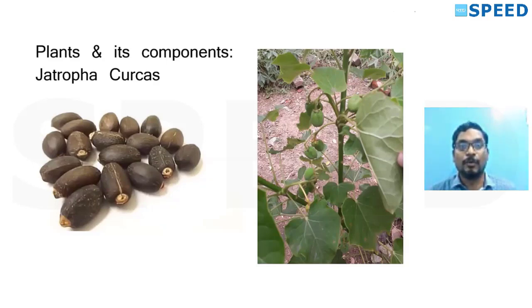Only four known plant toxalbumins in India: ricin, croton, jatrophin, and abrin. If there is a point with three or four keywords, be careful — it's a potential site for MCQ. So: ricin, croton, jatrophin, abrin — only four known plant toxalbumins in India.